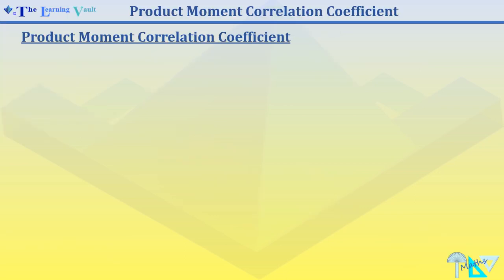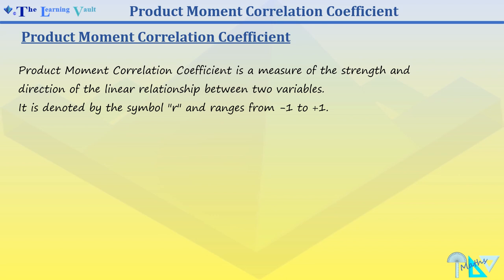Product moment correlation coefficient is a measure of the strength and direction of a linear relationship between two variables. It is denoted by the symbol r and ranges from negative 1 to plus 1.